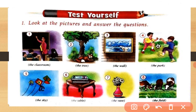Now look at the pictures and answer the questions. Pictures are given with a hint below each — use the hint to write your answer. In the first picture, a teacher is teaching in the classroom. The question is: where is the teacher? The answer is: in the classroom. Second picture: where is the fox? The fox is under the tree. So you write: under the tree.